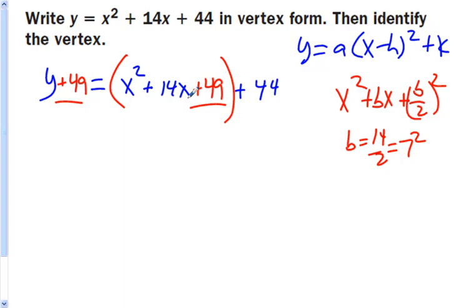Inside this parenthesis, I have a perfect square. So I'm going to factor it. Remember that it factors to x plus b over 2 squared. So I've got an x. My b was 14. When I divided it by 2, I got 7. So that's plus 7 squared.